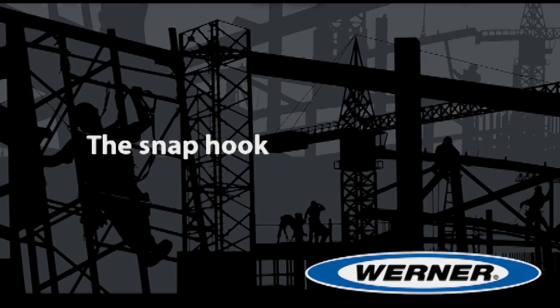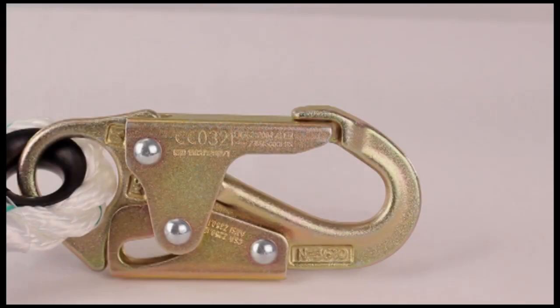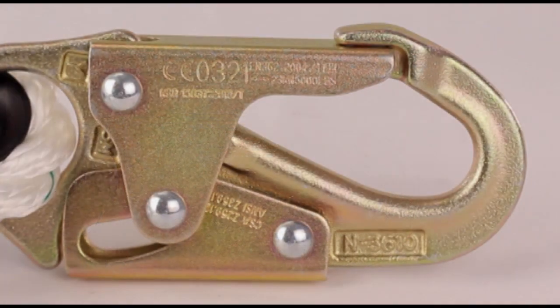The Snap Hook. The snap hook is a double locking mechanism. It has a carabiner style lock on the top.